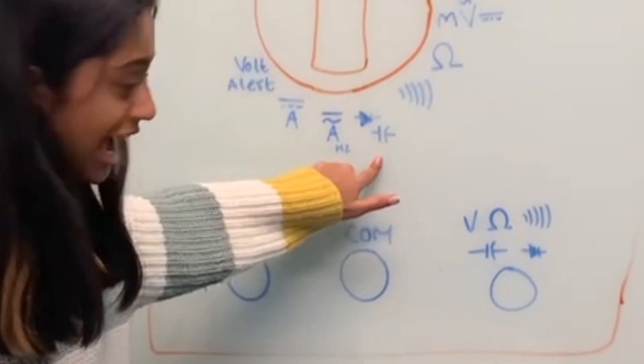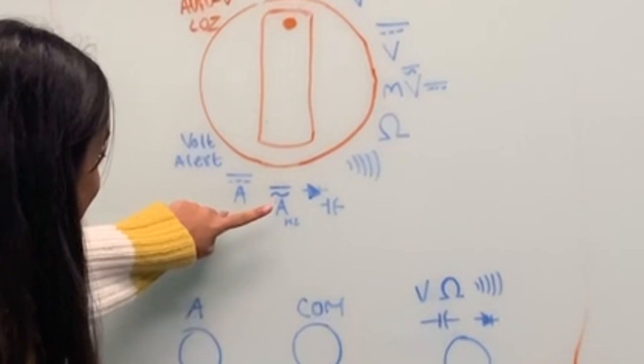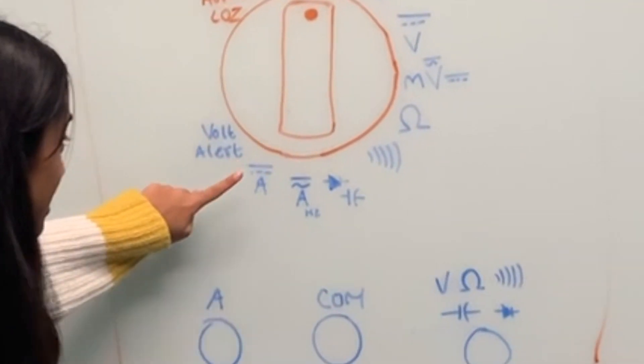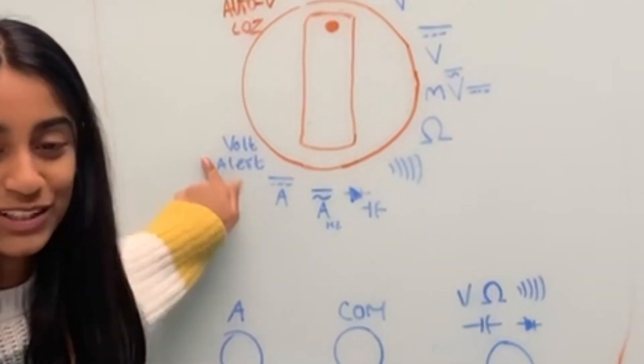And then the one after that is a diode test. This is the alternating current, and this is the direct current, and then this is the volt alert.